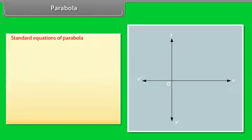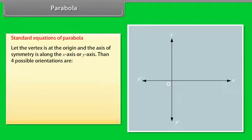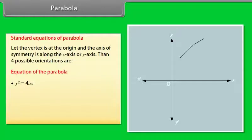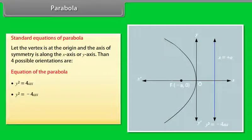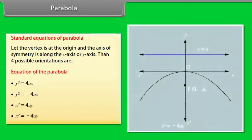Standard equations of parabola. Let the vertex be at the origin and the axis of symmetry along the x-axis or y-axis. Then four possible orientations are: y² = 4ax, y² = -4ax, x² = 4ay, x² = -4ay.